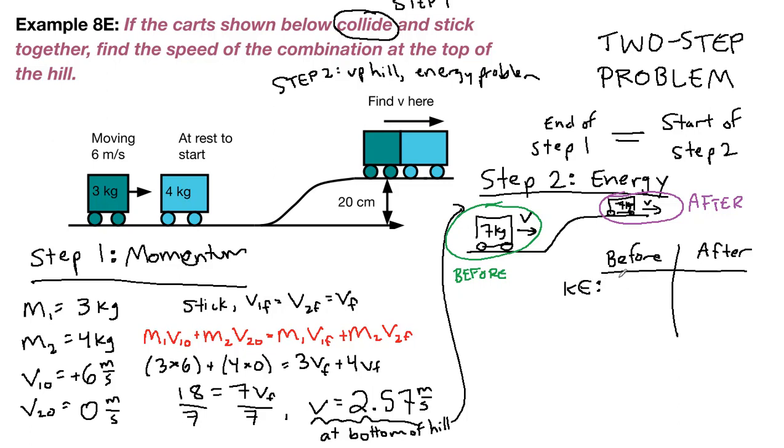Alright, so the kinetic energy question is, are we moving? At the beginning of step 2, we are moving, because we're moving at 2.57 meters per second. At the end of the problem, we are moving. The reason we know that is because we're asking specifically to find that speed. So 1 half m v, and I'm going to call it final final, just so that we know for sure that it's a different number value than the end of step 1, and it's going to be the end of our problem.